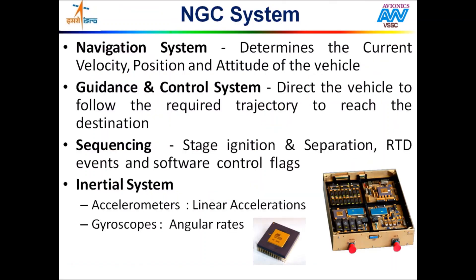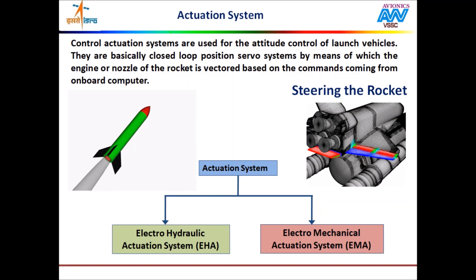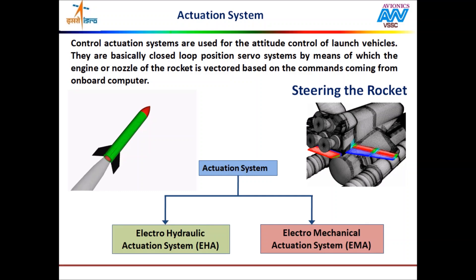Navigation guidance and control systems are operated using three computers in a launch vehicle: a navigation computer for navigation systems, a guidance computer for guidance and control, and a control electronics computer for control actuation systems. The driving system of a launch vehicle — control actuation system — is classified into two: electromechanical actuation systems, which turn the rocket using electrical power, and electro-hydraulic actuation systems, which turn the rocket using fluid pressure. The choice between them is based on the size of the rocket stages and the speed with which it is to be turned.